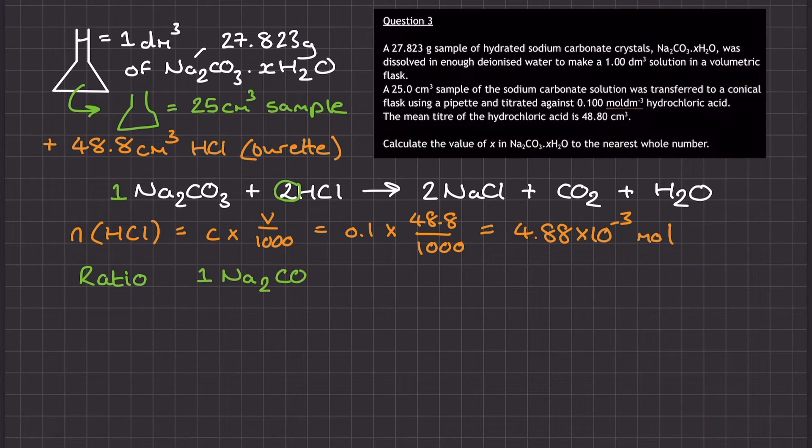Next up, I can see using the balanced reaction equation that the ratio between the HCl and the Na2CO3, the sodium carbonate, is 2 to 1. So if I divide the HCl moles that I've just calculated by 2,